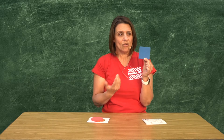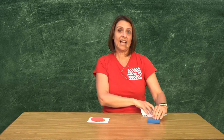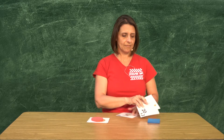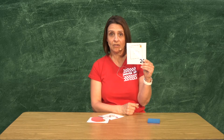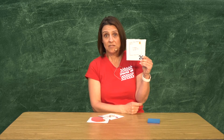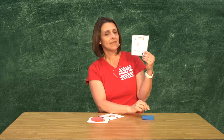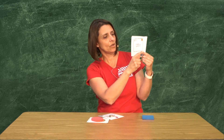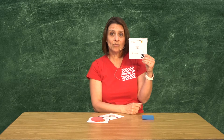¿Ustedes han visto un cuadrado en su casa o en la ciudad? Les voy a enseñar unas fotos que a lo mejor han mirado en su casa. Aquí tengo un sobre de correo. La forma del sobre es cuadrado. Tiene uno, dos, tres, cuatro lados, igual como el cuadrado que tenía. Y las esquinas: uno, dos, tres, cuatro esquinas. Así que es un cuadrado.